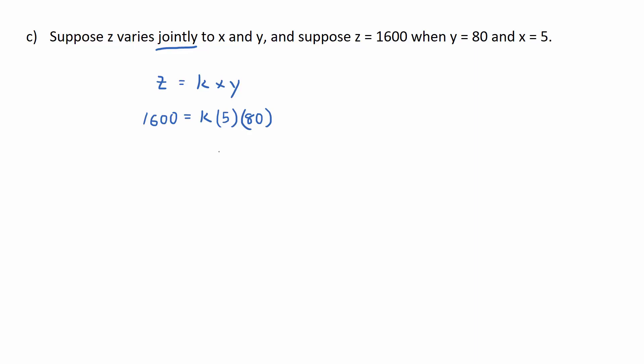5 times 80 is 400. So this is really 400k on the right side. Or 400k equals 1600 if you prefer. And then the idea is, of course, divide both sides by 400. And you'll get k equals 4.